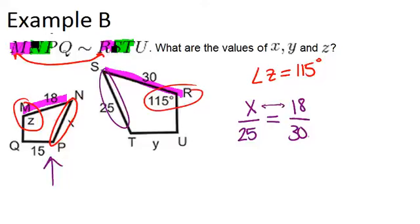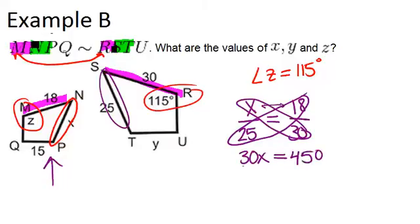Now I can solve this proportional equation by cross-multiplying. So that means multiply 30 by X and 18 by 25. So you get 30X equals 450. And then you divide both sides by 30, and you get X equals 15.